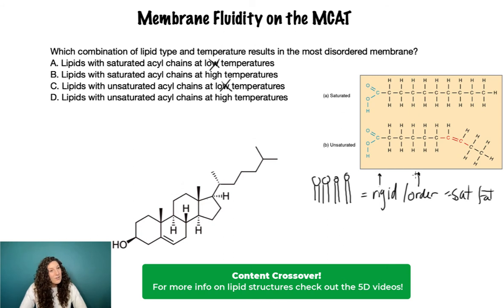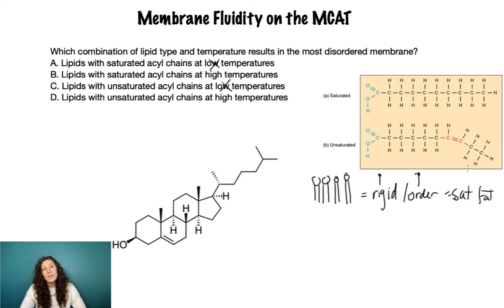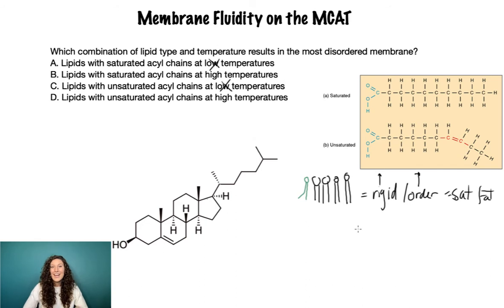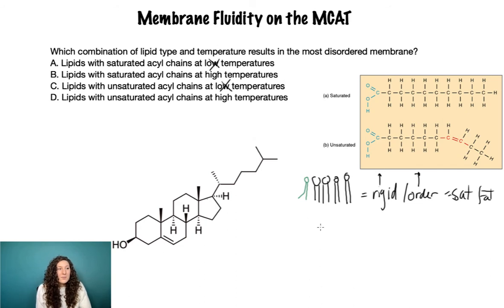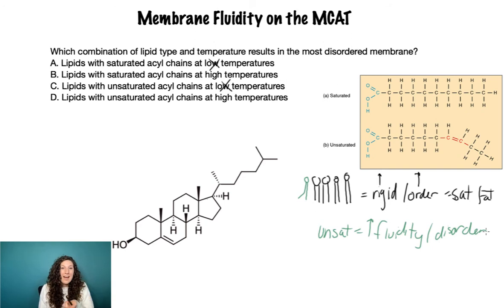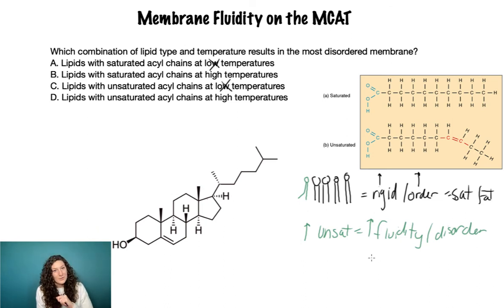Contrast that with unsaturated fat. The chain looks pretty good for the first few carbons, but then we have a double bond which produces what we call a kink. That kink is going to push the next phospholipid over a little bit, creating more space and more fluidity. The key thing to remember is that unsaturated fats give you increased fluidity or disorder — and that's true in a compounding way. The more unsaturated fats we have in a membrane, the more fluidity or disorder we get.